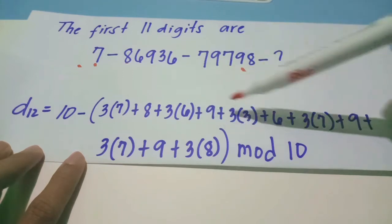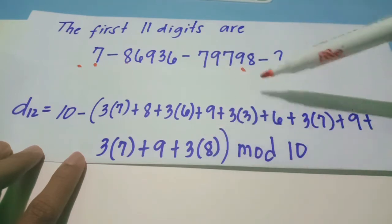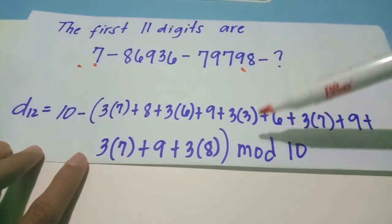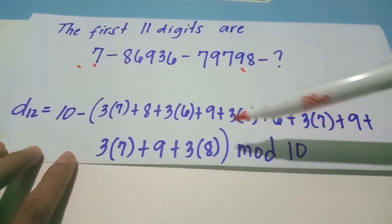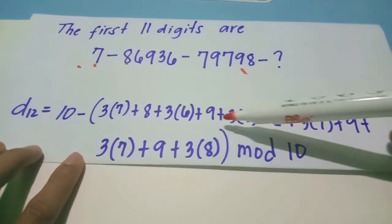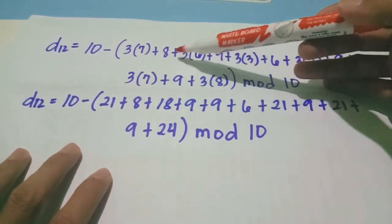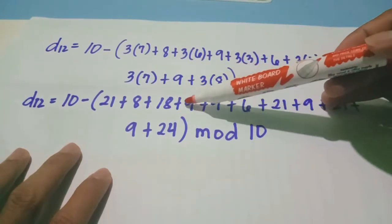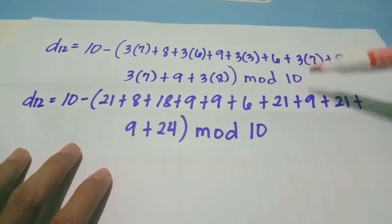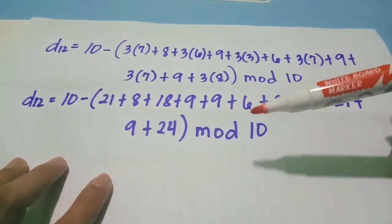Plus 6 D sub 6, D sub 7, up to the end. We have D sub 11, 3 times D sub 11 which is 8, then modulo 10 or mod 10. So multiply and then add, to make it easier, multiply first what's in the parentheses. So multiply, 3 times 7 we have 21, bring down plus 8, 3 times 6 we have 18, plus 9, plus 3 times 3 we have 9, plus 6. Then multiply everything, and then afterwards add all of this. So 10 minus the quantity, the value, then modulo 10.